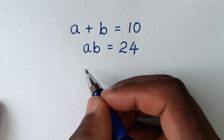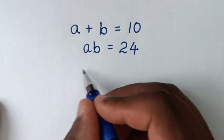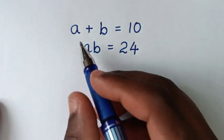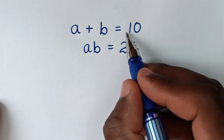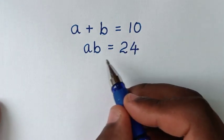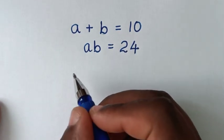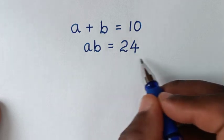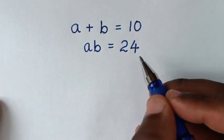Hello, you are welcome to solve this math problem, which is: a plus b is equal to 10, a times b is equal to 24. We need to find the values of a and b from these two systems of equations.